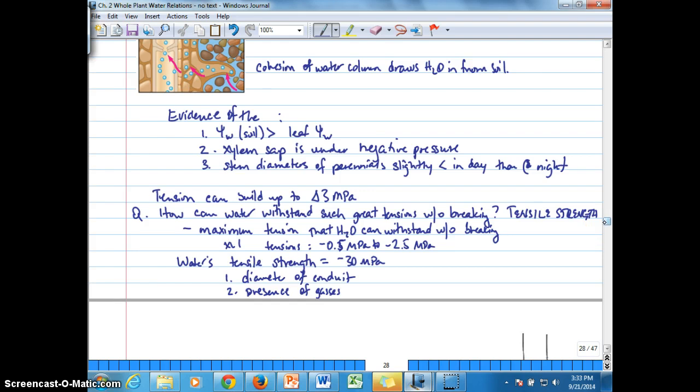And what kind of tension, why doesn't the water column break under the kinds of tensions that occur, or the negative pressures that occur in xylem, such as anywhere from negative 0.5 to negative 2.5 megapascals? And the answer was that water has a high degree of tensile strength, which is the maximum tension that the water can withstand before it breaks.